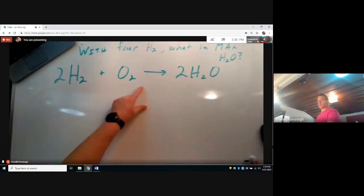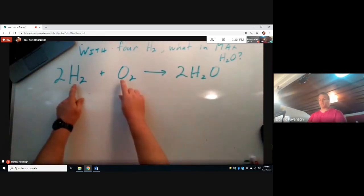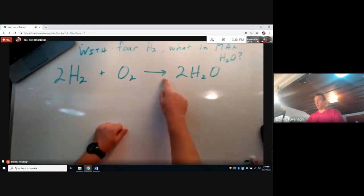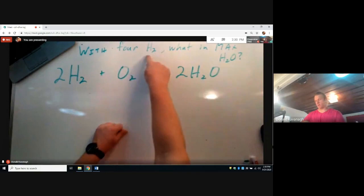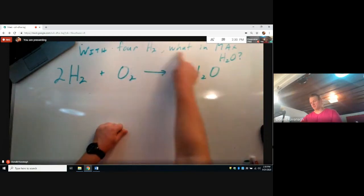Here's a balanced chemical reaction showing the combination of hydrogen gas and oxygen gas forming water. The question is a limiting reactant type question. With four water molecules, what is the maximum amount of water that could be produced?